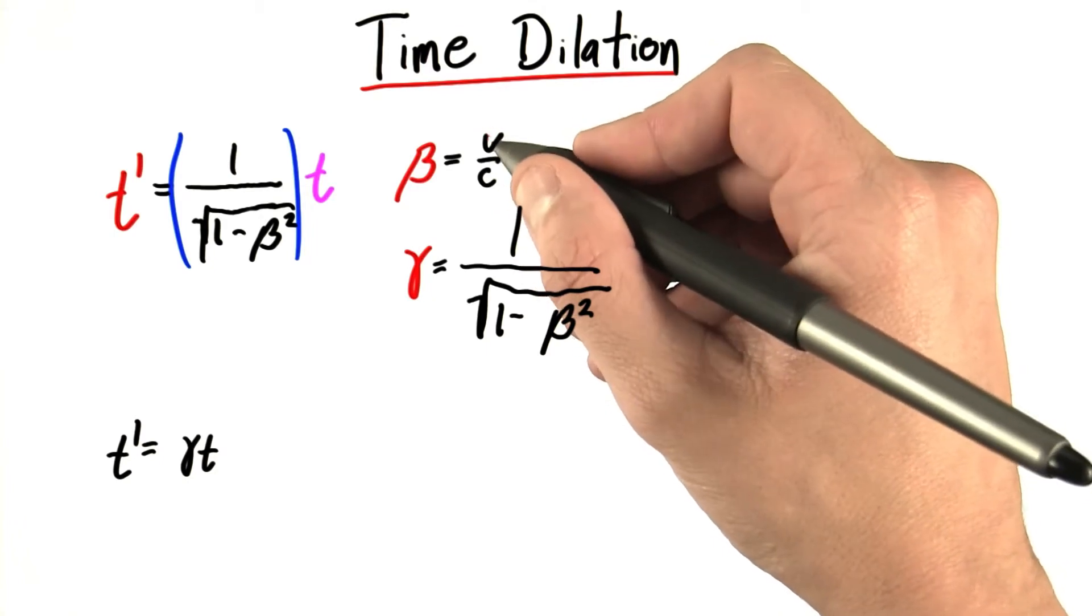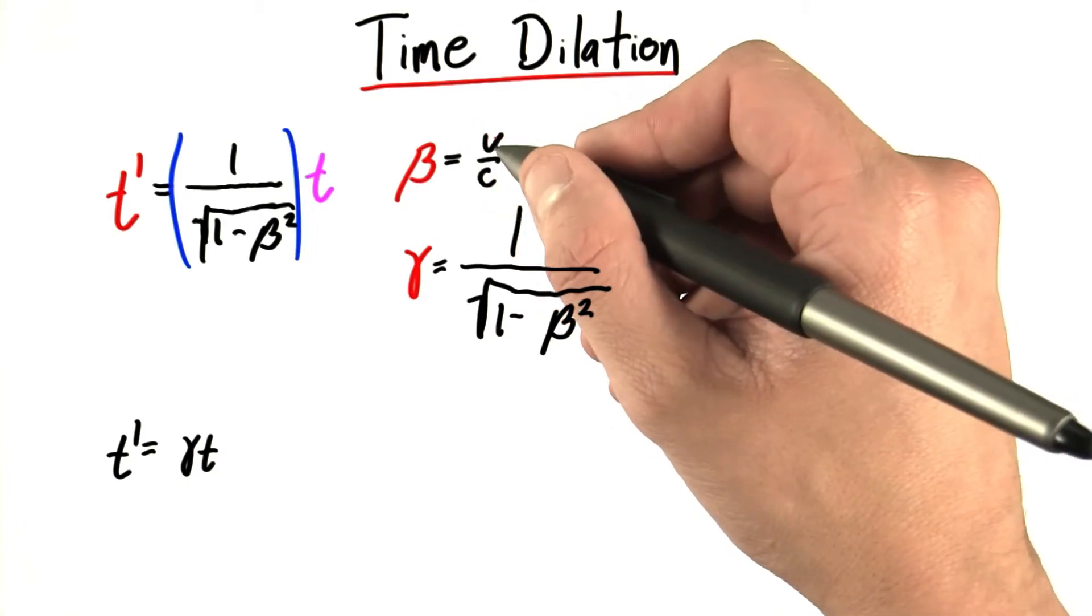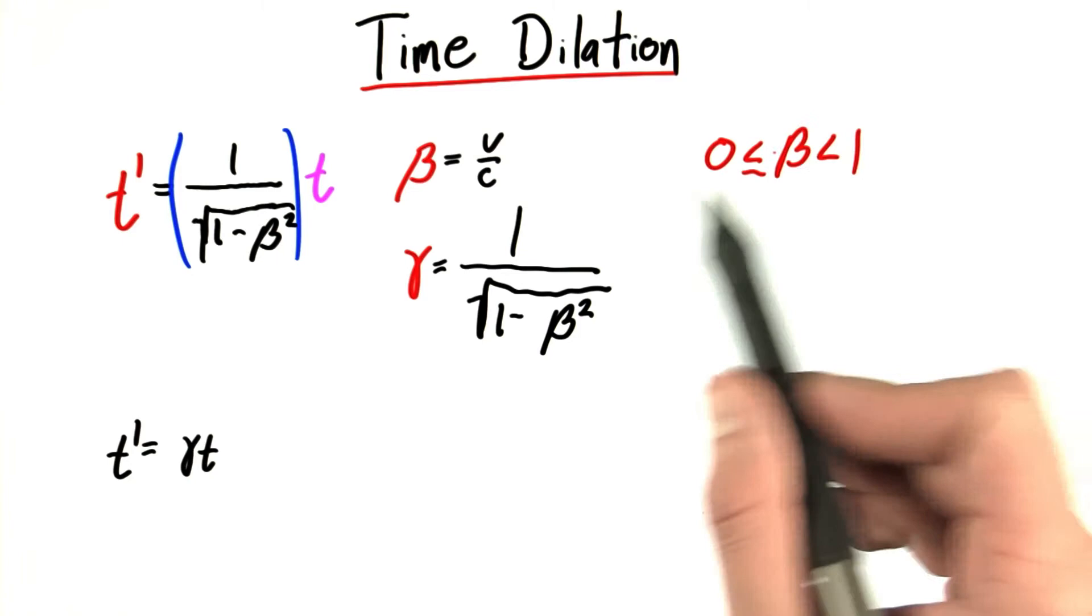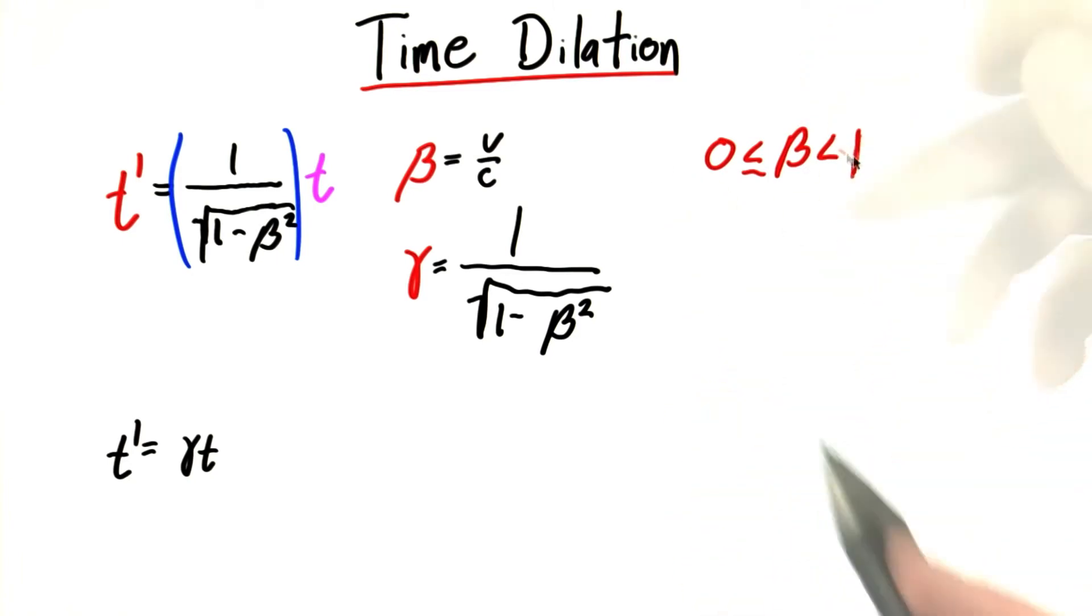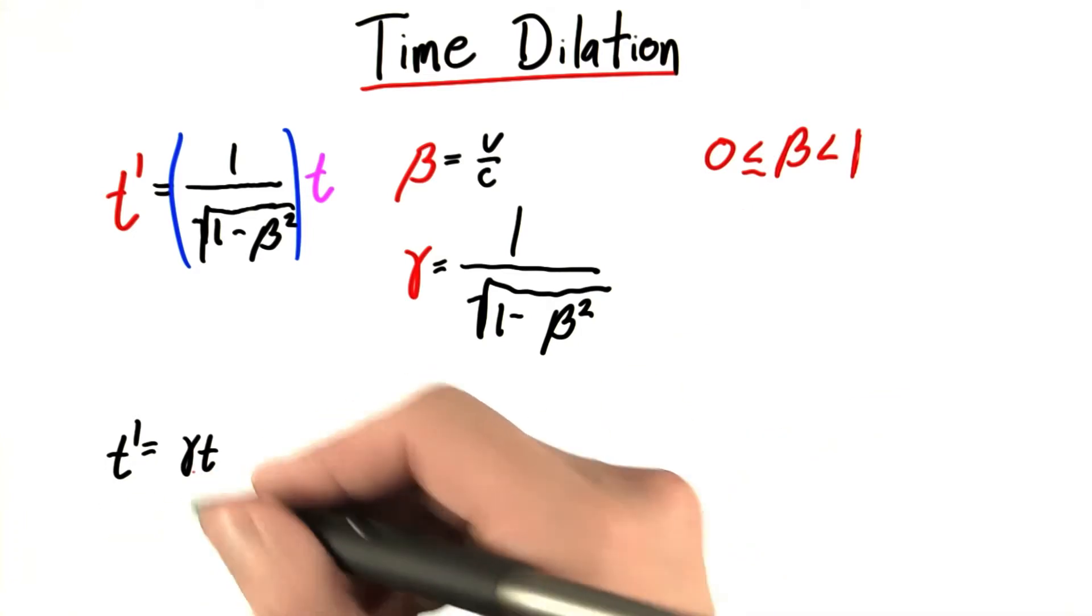So we can go as slow as 0, stopped, or up to the speed of light, which means that beta is between 0 and 1. So it can't be equal to the speed of light. I want you to tell me, what's the minimum and maximum value for gamma?